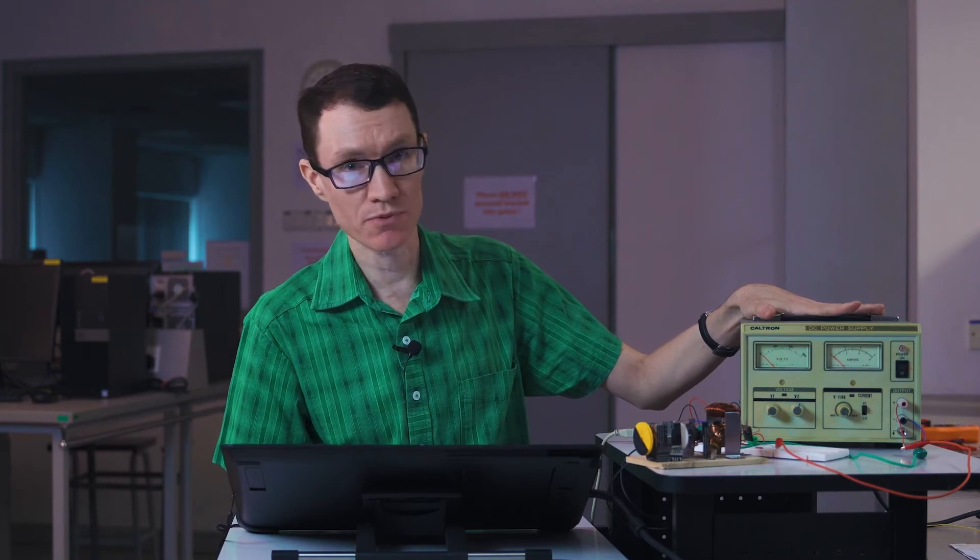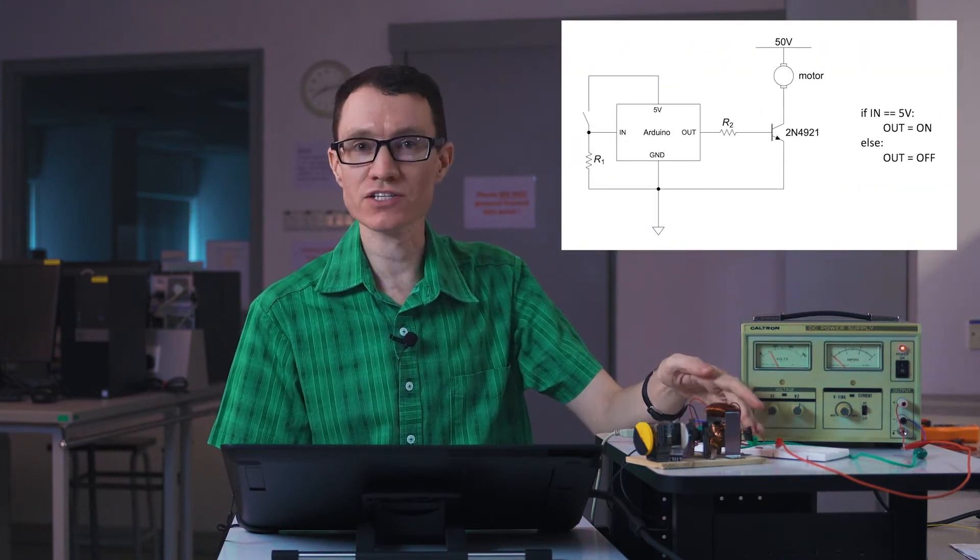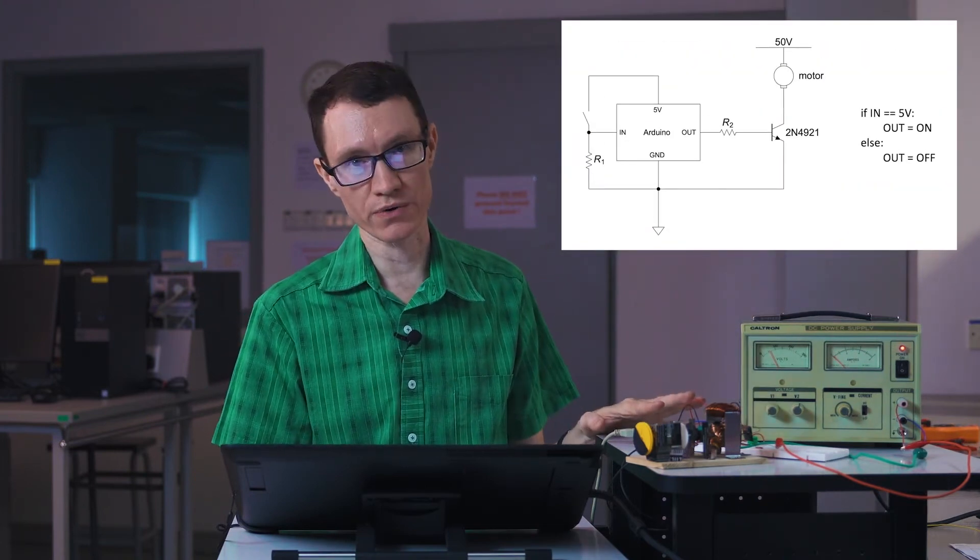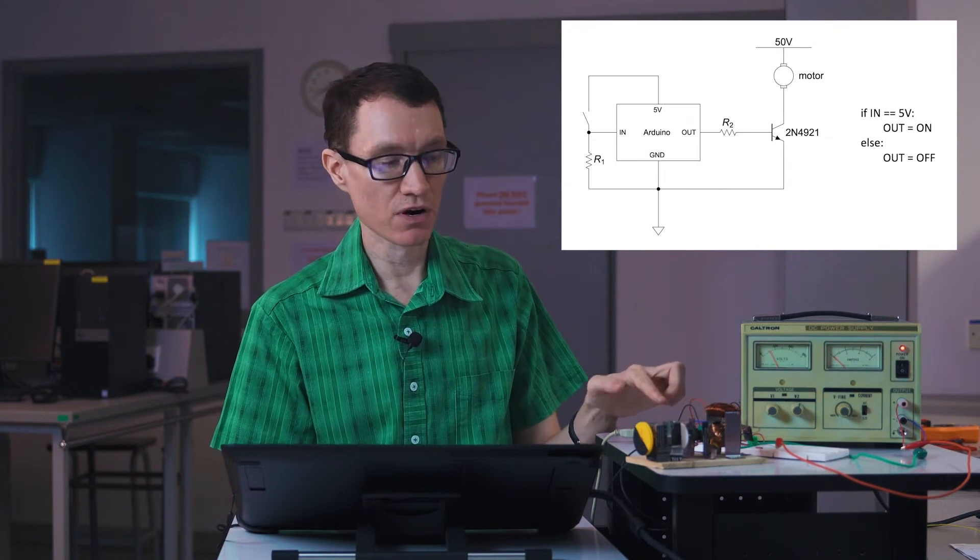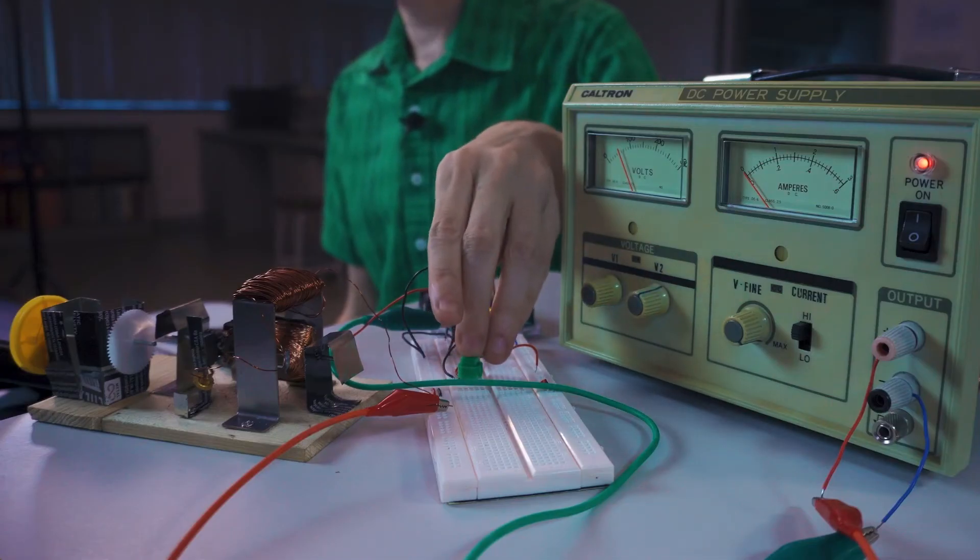Let's now change our demonstration circuit here and switch this motor on using the output signal of an Arduino. We have the same power supply as we had before. I'm going to go ahead and turn it on. We have it set to 50 volts and the switch that we used to have between the motor and the power supply is now providing a digital input signal to our Arduino here. One of the output pins of our Arduino now leads to the base of a power bipolar transistor. When I click the switch, the motor is going to switch on.